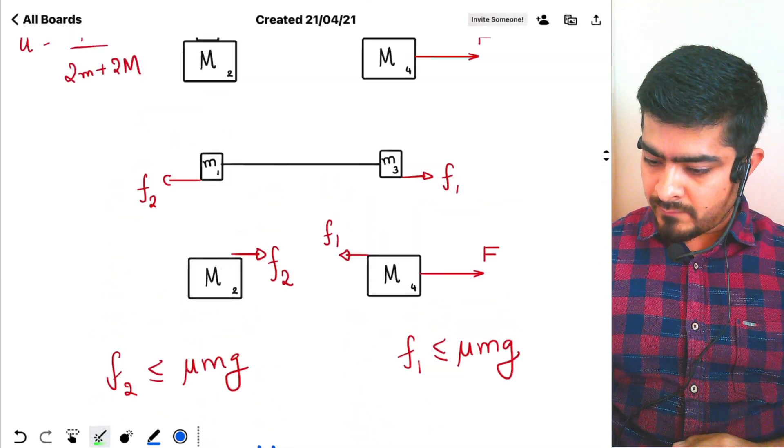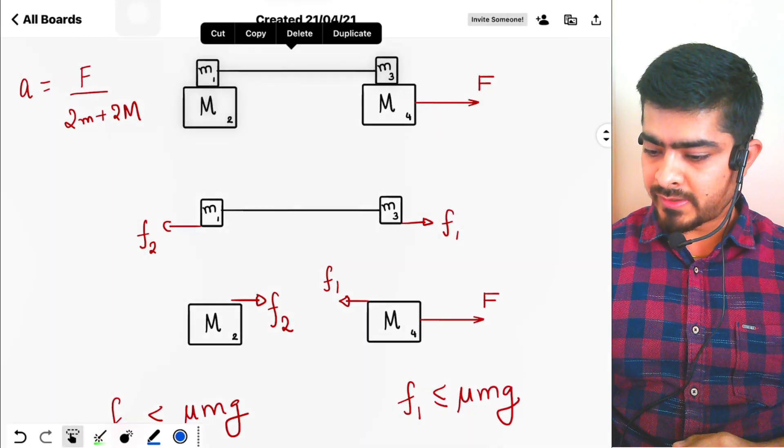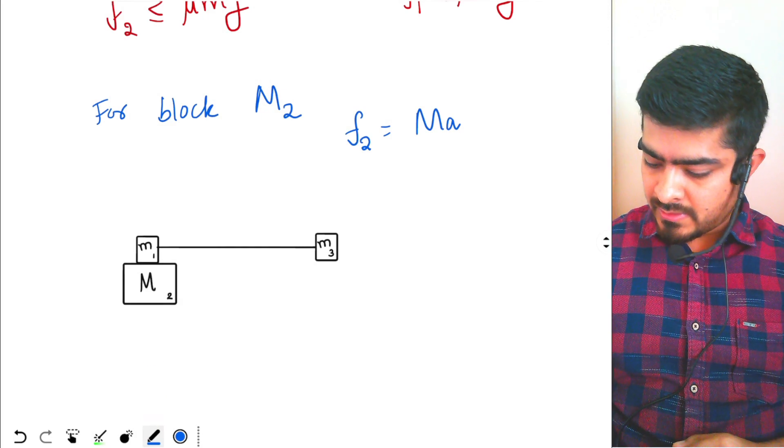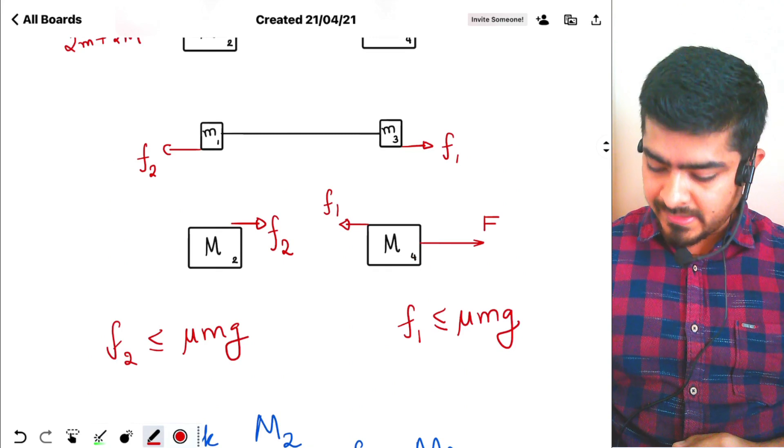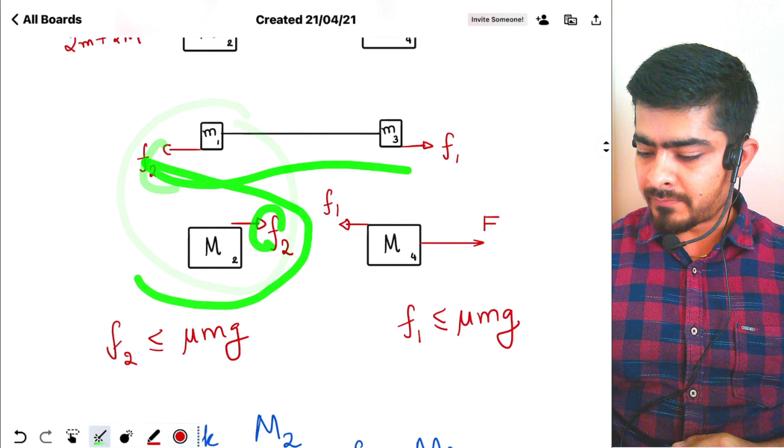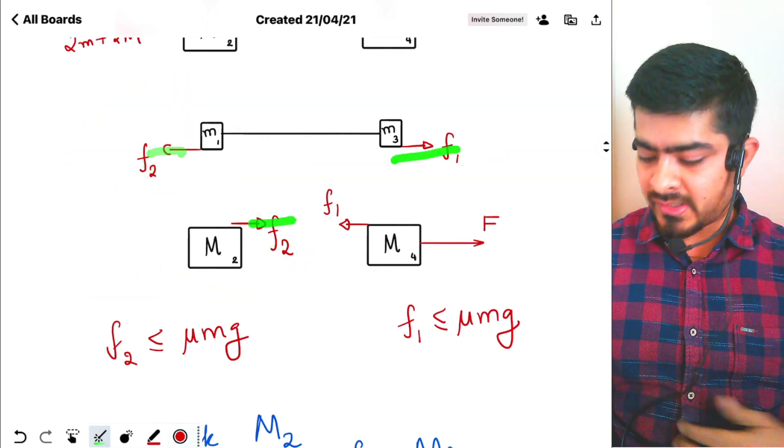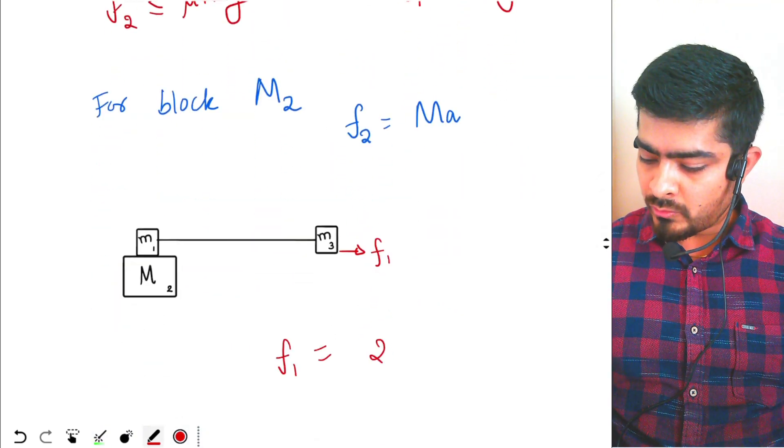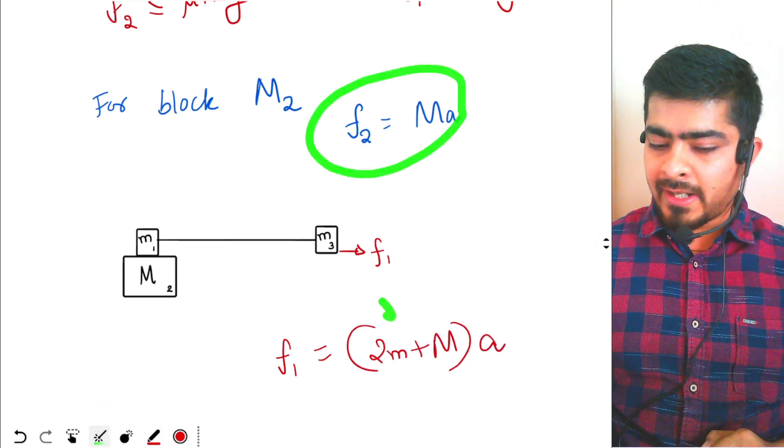Now we take a system like this. We take these blocks together, so on these blocks, here F1 is acting like this. I have combined these two together, so this is an internal force now. For this system, this F2 is an internal force and F1 is the external force. So the external force F1 will give me what? F1 will be equal to 2 times small m plus capital M multiplied by A. Now you look at F2 and F1.